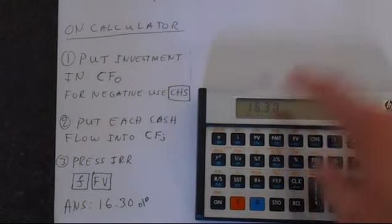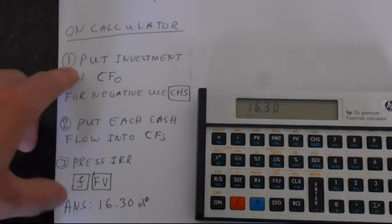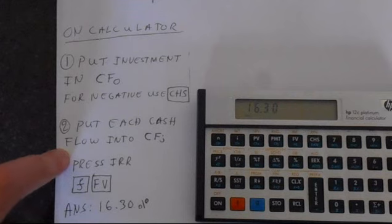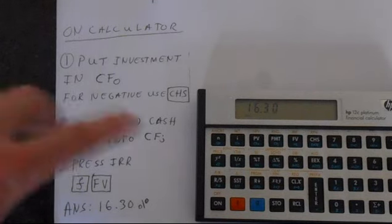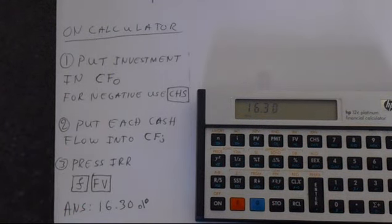So yes, we get 16.3 as expected. So all you're doing with these internal rate of return calculations is putting your investment into cash flow zero and all of your cash flows received. So you're adding the cash flow that's going out and cash flows going in. These are all net cash flows, and you're putting them into CFJ and then do the calculation.